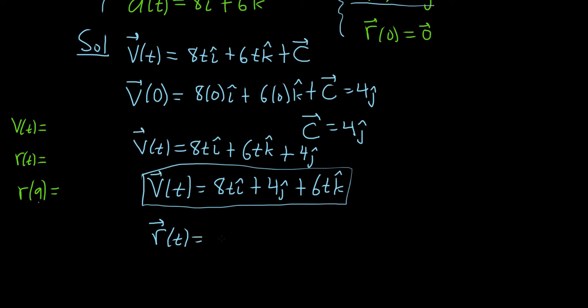So integrating 8t is going to give us 8t squared over 2 using the power rule i hat plus 4t j hat plus 6t squared over 2 k hat.